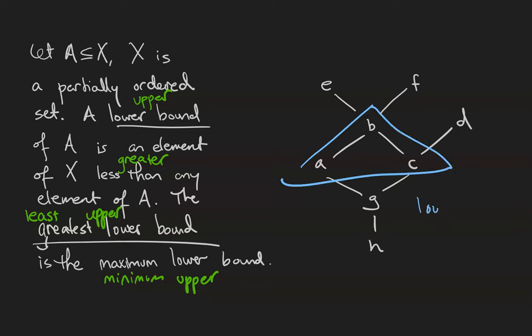The lower bounds of this subset are all of the elements that are less than every element in the set. That includes g because g is less than both a and c and by transitivity less than b, and also h because h is less than g. The greatest lower bound abbreviated glb of the set is g because it is the maximum lower bound. The upper bounds of the set are the elements b, e, and f. It might surprise you that b is an upper bound of a set that it is included in, but remember partial orders mean less than or equal to and b is equal to itself. Therefore the least upper bound or lub of our subset a is the element b because it is the least of the set of upper bounds.